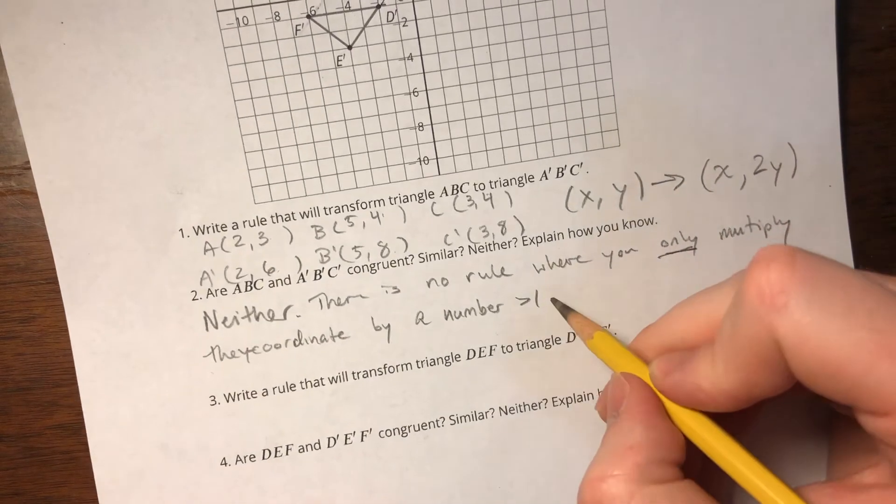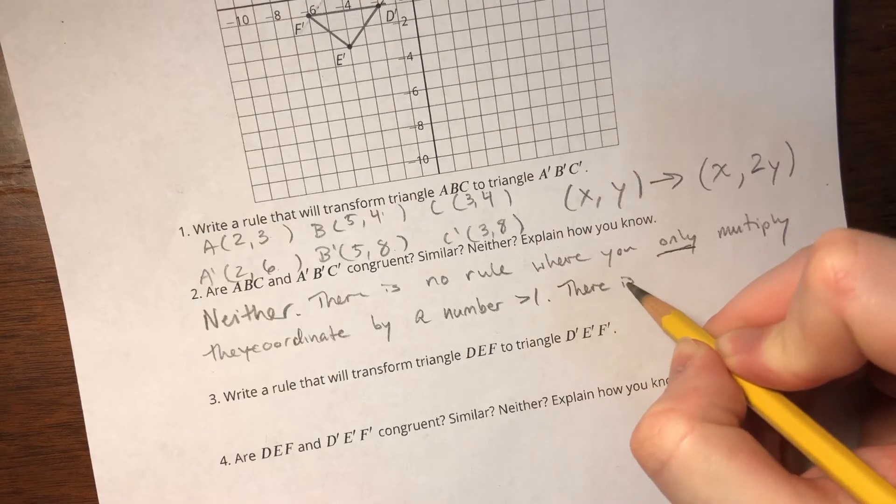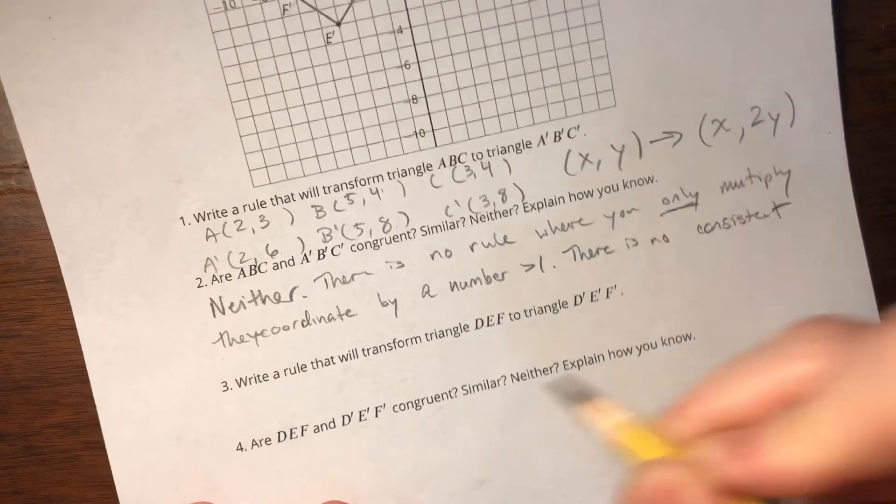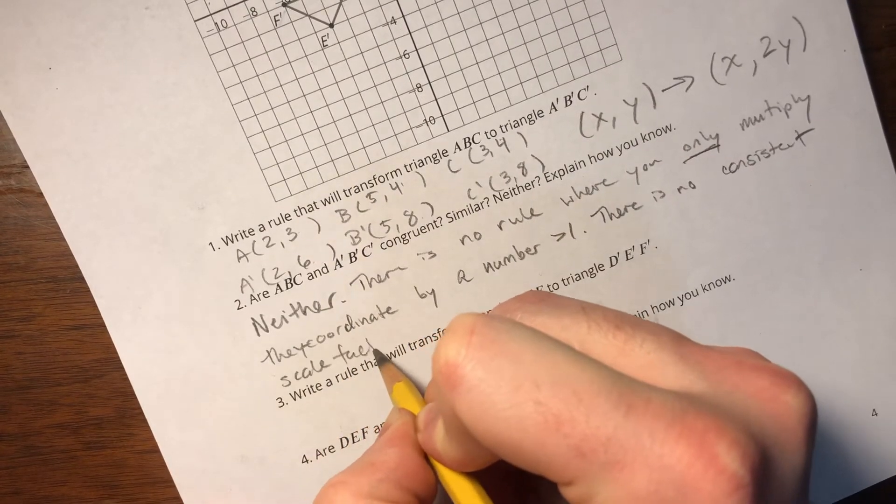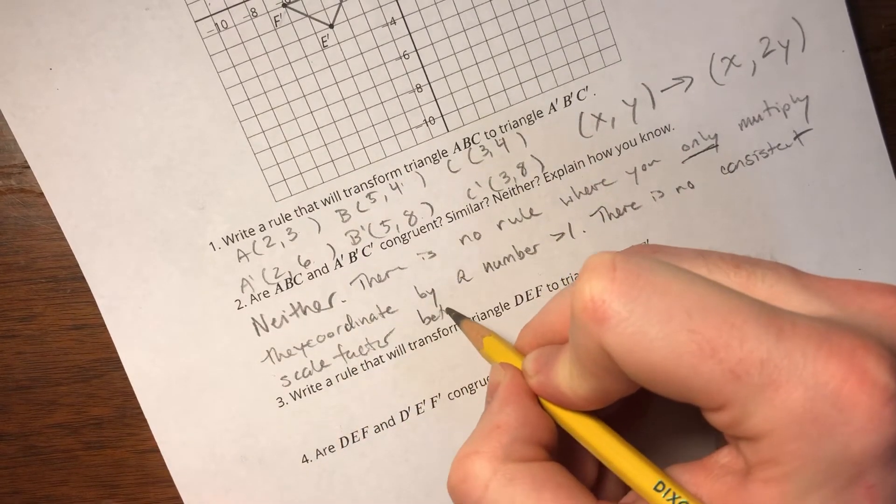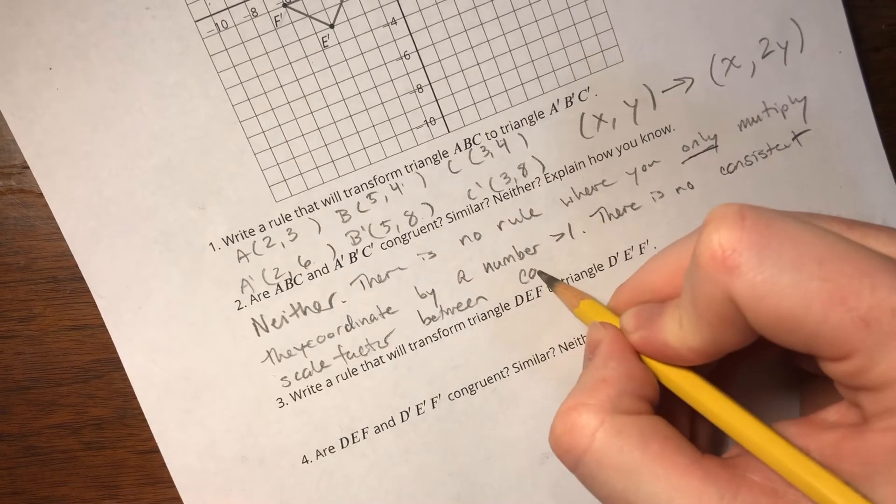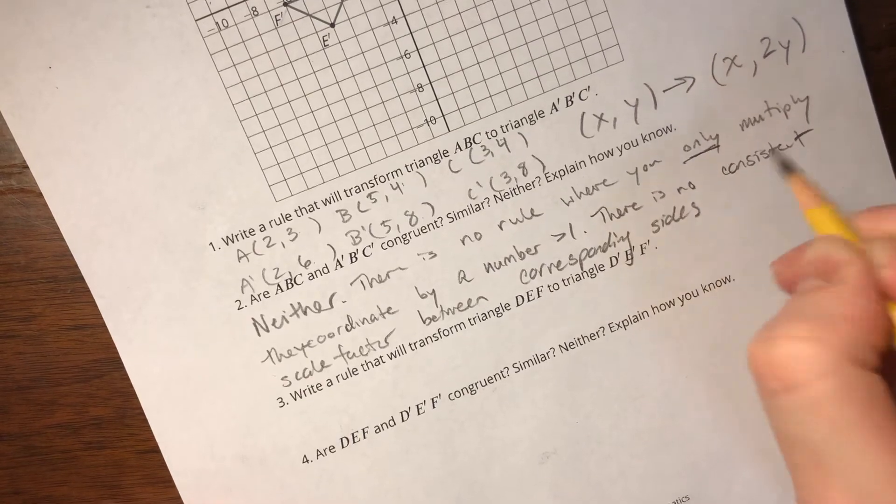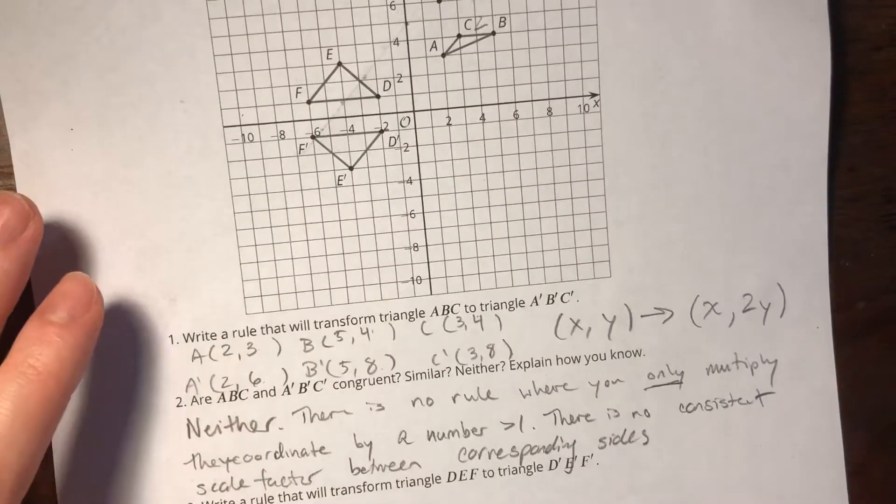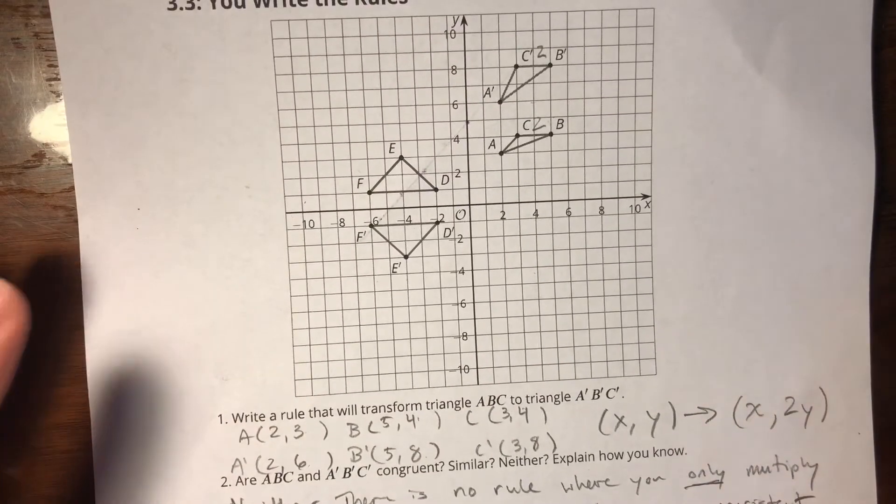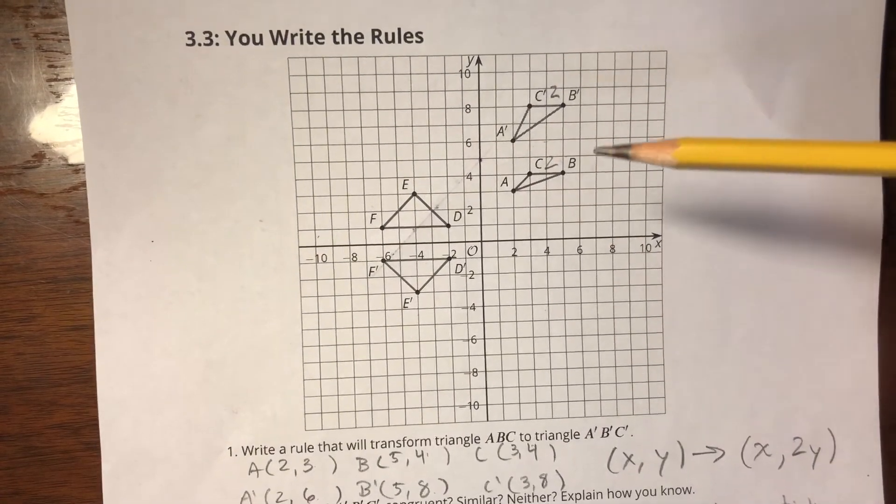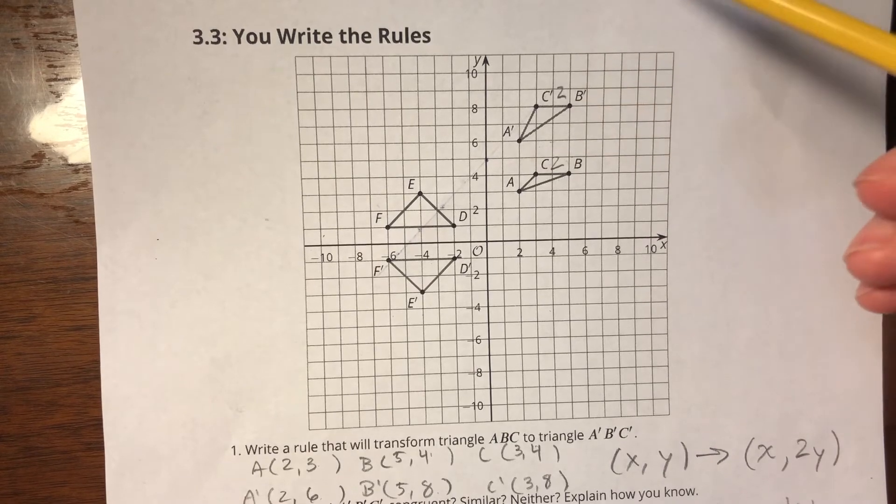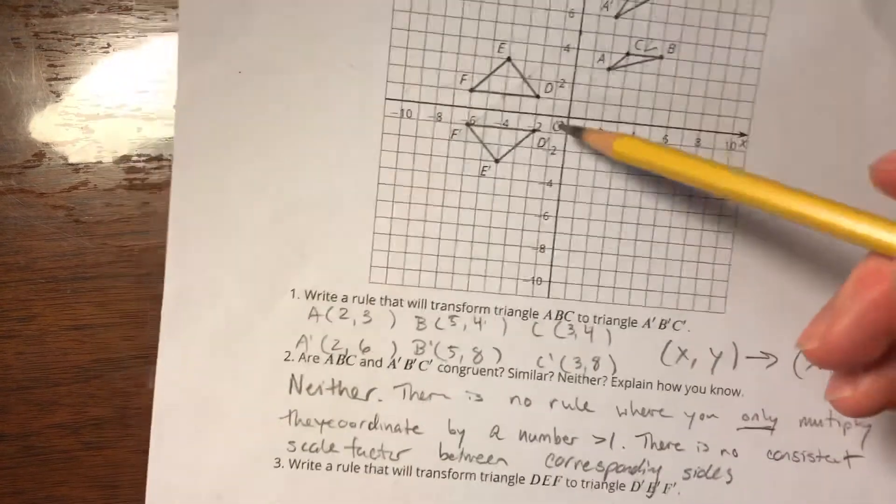We never only multiply the y coordinate or only multiply the x coordinate by a scale factor. And I can also say that there is no consistent scale factor between corresponding sides. That's another way we can tell it's not similar. And also not congruent because a congruent figure would have a consistent scale factor of 1. So if there's not any consistent scale factor period, then it's neither congruent nor similar.